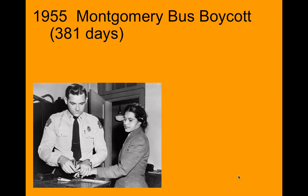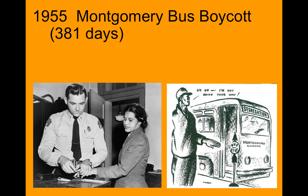In 1955, Rosa Parks, a seamstress in Montgomery, Alabama, refused to give up her seat in the front of a bus to a white man and was arrested. This led to the Montgomery bus boycott, where African Americans refused to ride the buses for 381 days. The public transportation in Montgomery, Alabama, had a very large African American community riding it, so when they boycotted, the buses shut down. This lasted for 381 days.